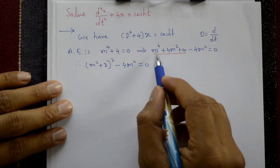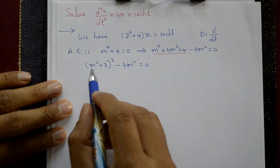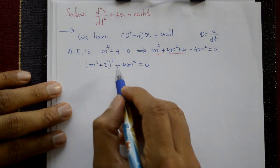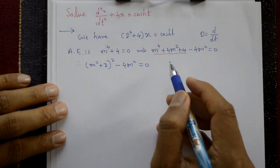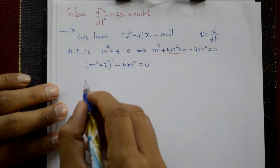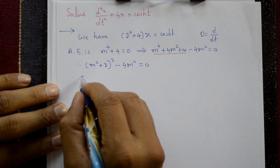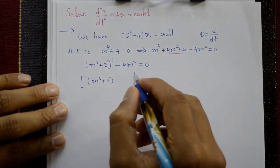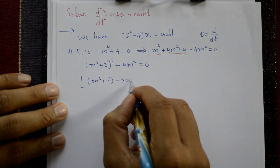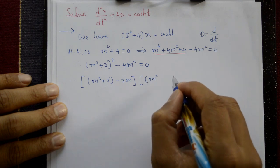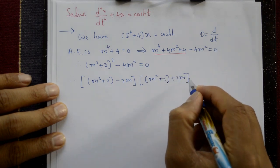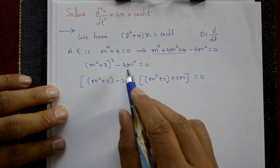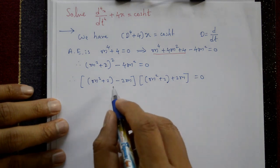Using the formula a² - b² = (a+b)(a-b), we apply it to (m² + 2)² - (2m)² = 0. This factors as (m² + 2 - 2m)(m² + 2 + 2m) = 0, giving us m² - 2m + 2 = 0 and m² + 2m + 2 = 0.